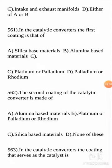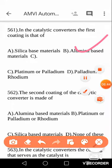Last question for today — in catalytic converters, the first coating is made of what? Catalytic converters are coated in layers. The options are silica-based materials, aluminium-based materials, platinum, or palladium and rhodium. We have discussed platinum, palladium, and rhodium before, but the first coating in catalytic converters is aluminium-based materials.